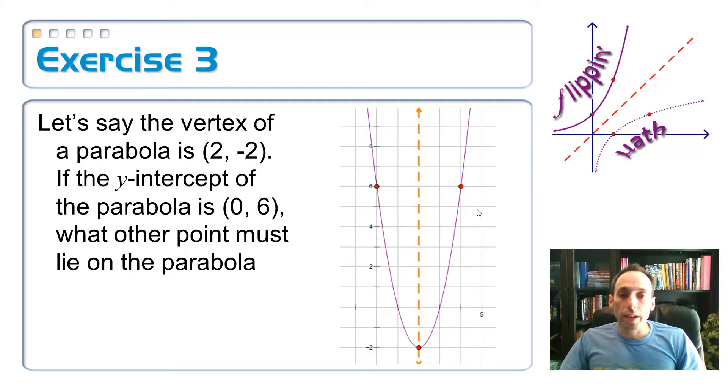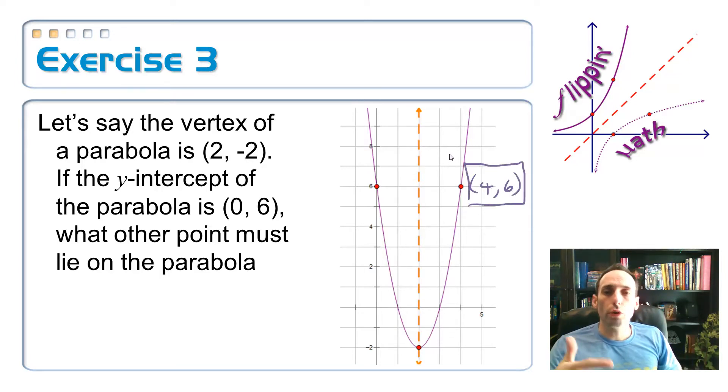So the coordinates that also have to be on there are - this is 4 comma 6. And again, it's that aspect of symmetry that's going to help us graph some of these quadratic equations.